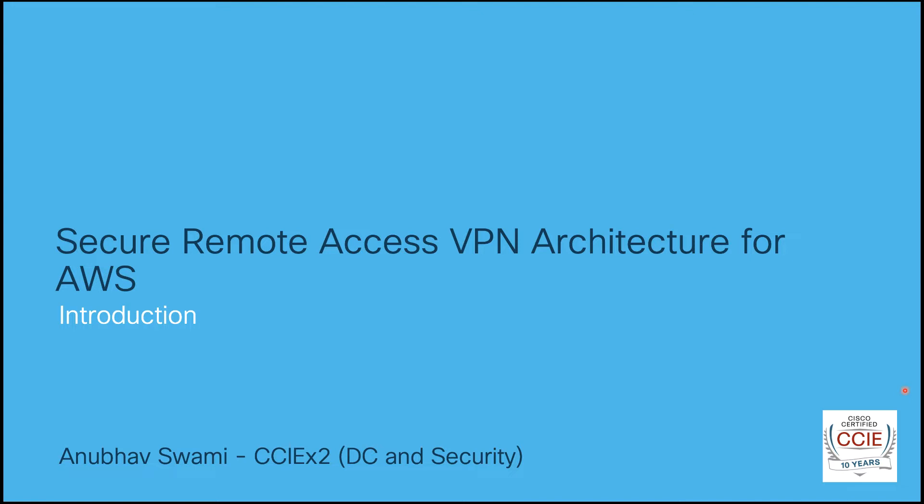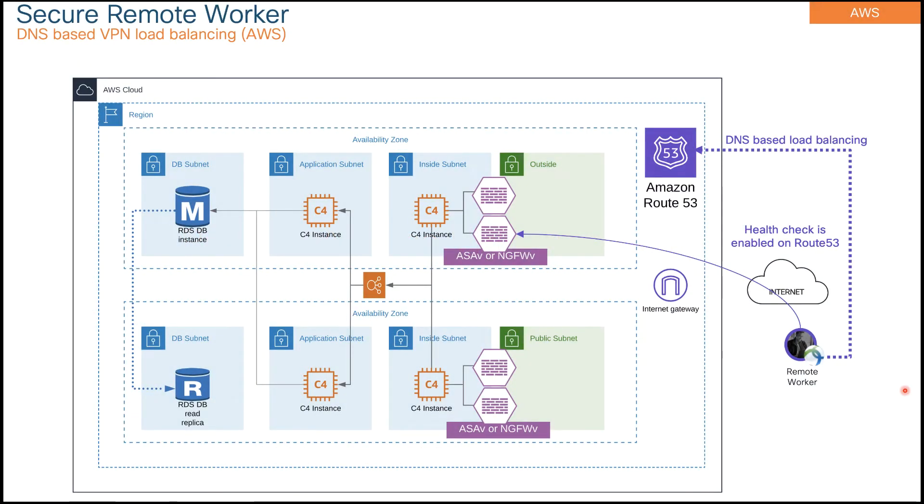In your data center, you can provision your firewall at the edge using HA or native VPN clustering. Those features are not available in the cloud because of layer 2 abstraction. So we don't have native VPN clustering in the cloud, but you can still have a scalable solution. I'm going to be focusing on this particular design where you have multiple firewalls per availability zone, and this is a three-tier architecture.